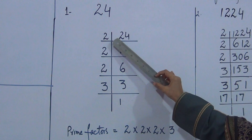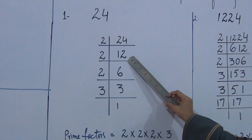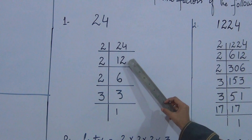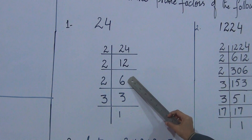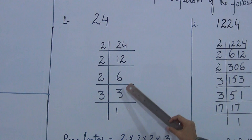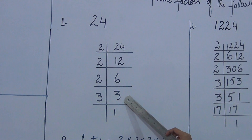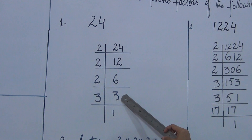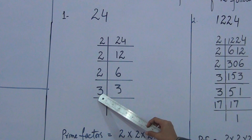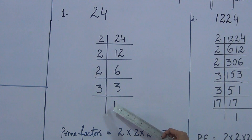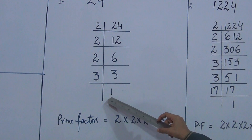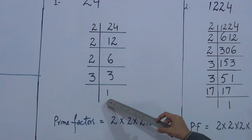24 divided by 2 gives 12. 12 is again an even number. 12 divided by 2 gives 6. 6 is again an even number. 6 divided by 2 gives 3. Now 3 is not divisible by 2. 3 is a prime number. 3 divided by 3 gives 1. When we reach 1, that is the end point.